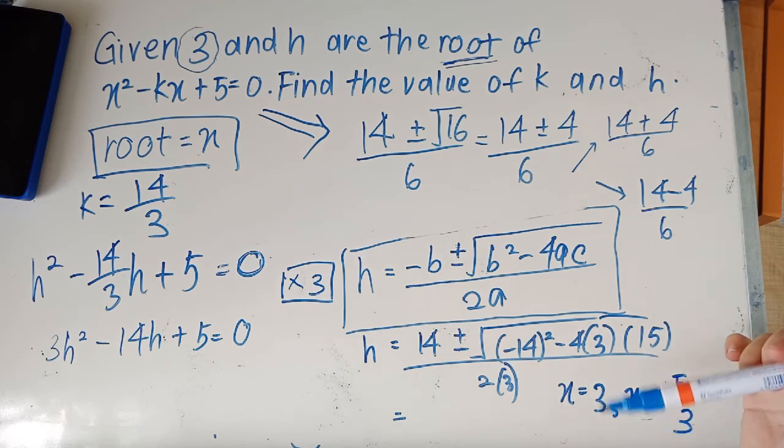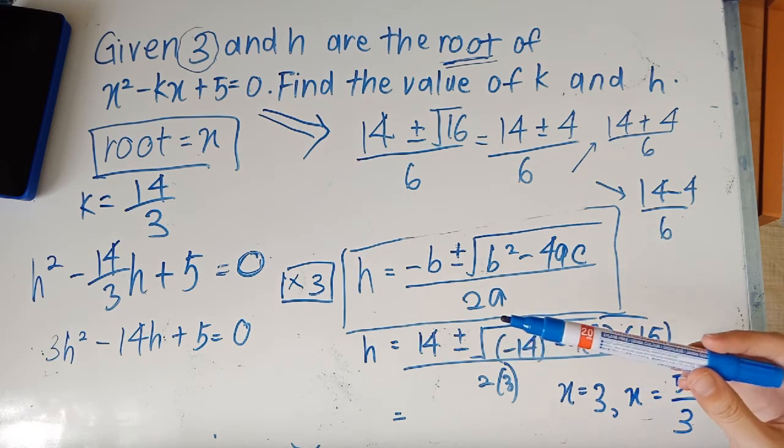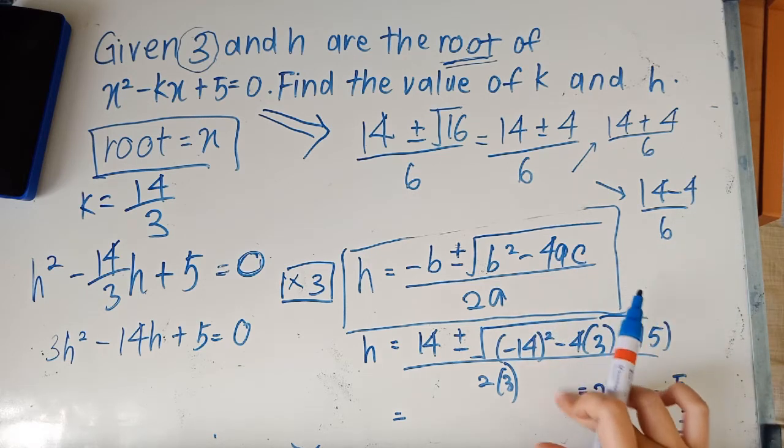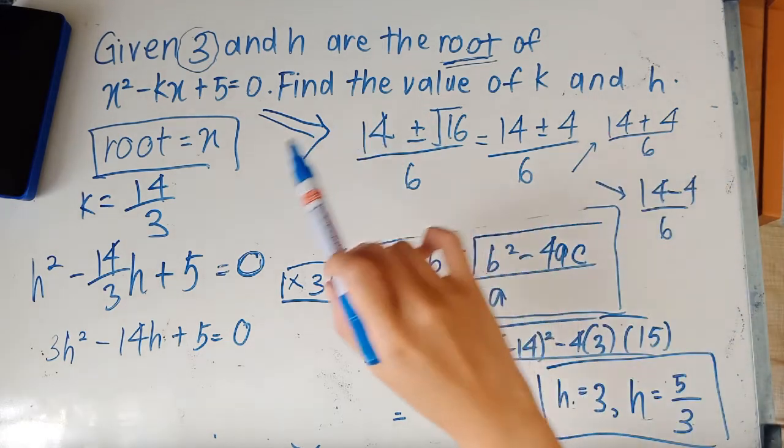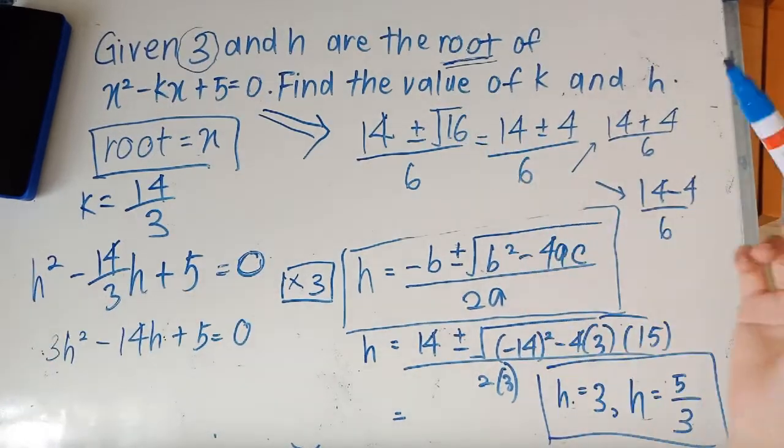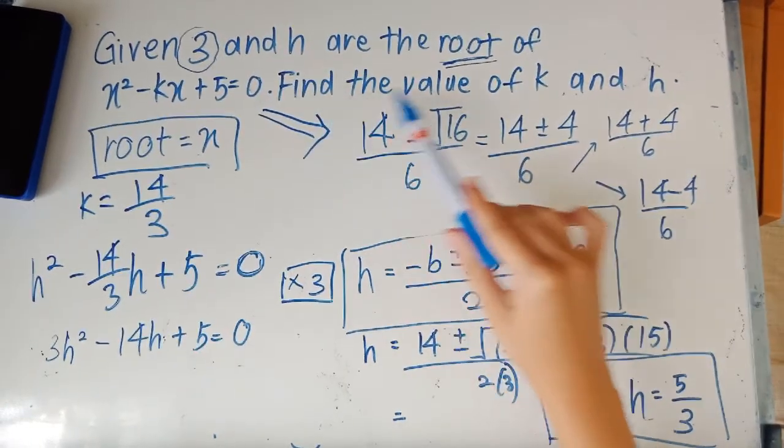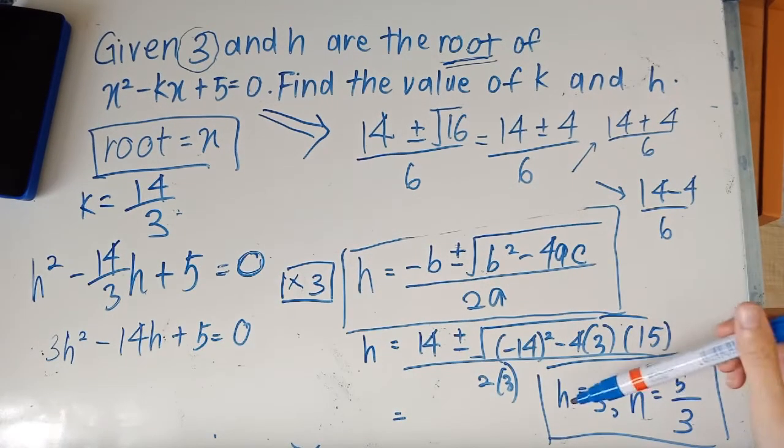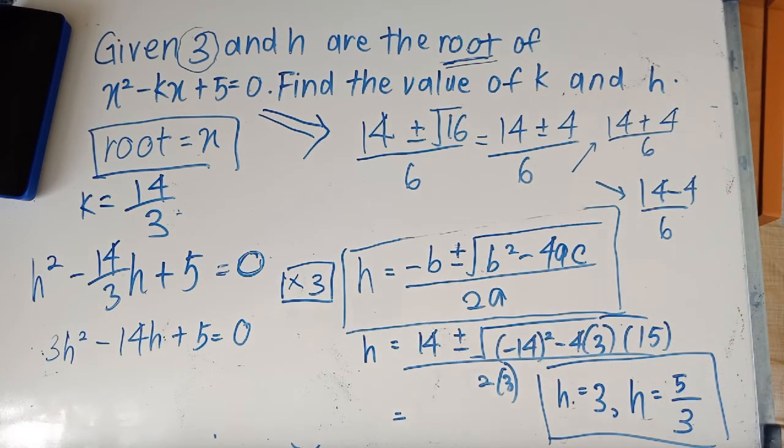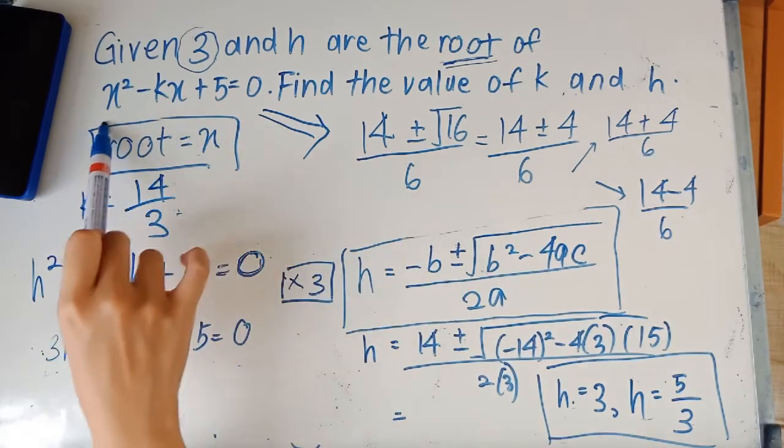Now if you look back to the question, what they're asking for is actually h. So I'm sorry, it's h. So now just read the question again and see if you have found your answer. Find the value of k and h. You have the k value here and you have the h value here, so this question is solved.